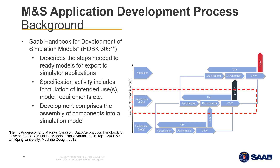The main activities of the handbook are described in the dashed and red section of this figure. First, we have a specification activity including definitions of model intended use, requirement specification, etc. We then go into a development activity where component models are connected to form a subsystem model. The subsystem model can then be verified and validated, and this use provides feedback for refining the specification. Finally, once the model is mature enough, it can be exported for use in a simulator application. This highlighted workflow is applicable not only to the development of subsystem models, but also to simulator applications as well as component models and component model libraries.